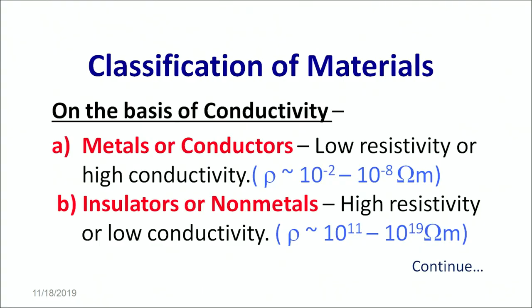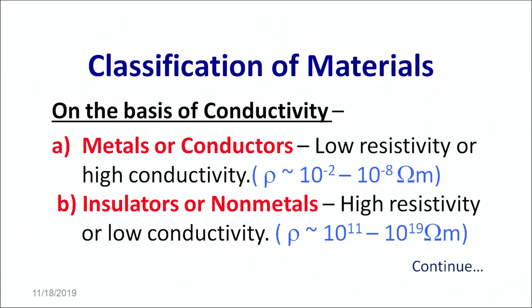On the basis of conductivity, the materials are classified into three broad categories. The first one being metals or conductors. Metals or conductors like iron, gold, copper — these have low resistivity and high conductivity. The resistivity is of the order of 10 raised to the power minus 2 to 10 raised to the power minus 8 ohm-meters.